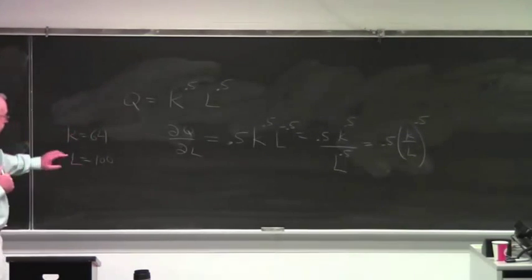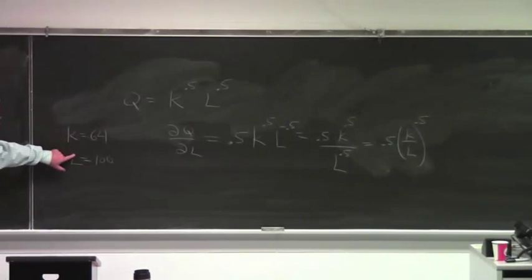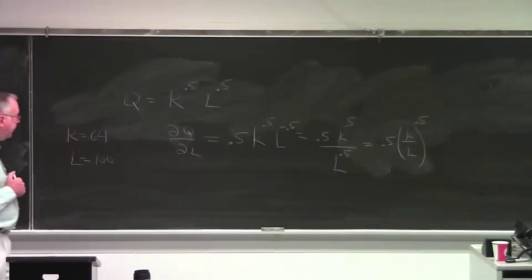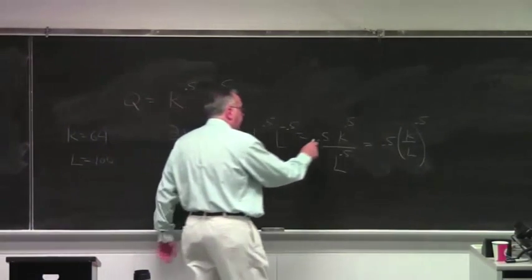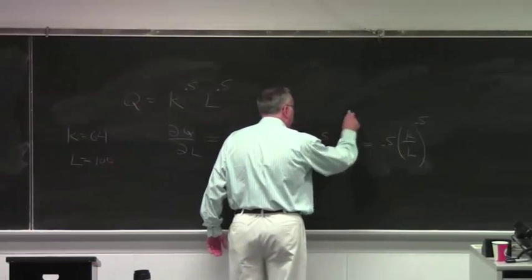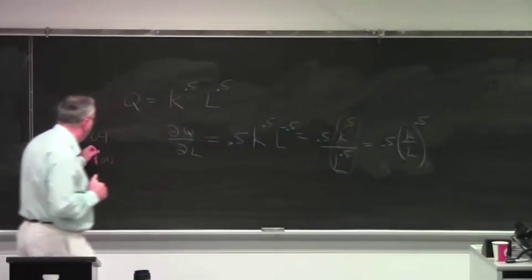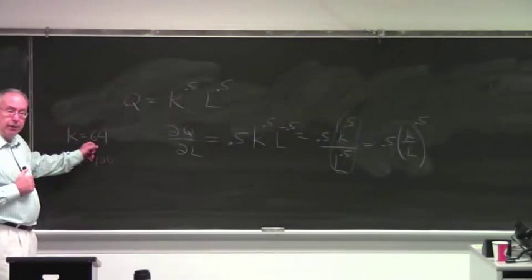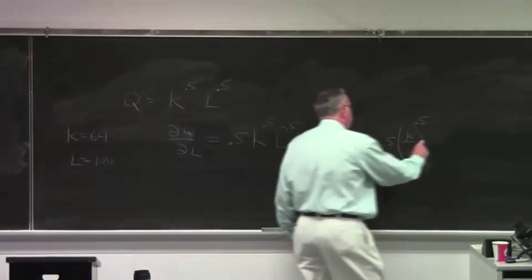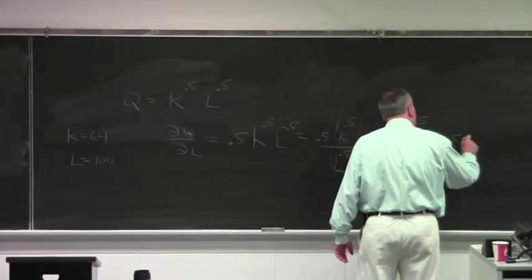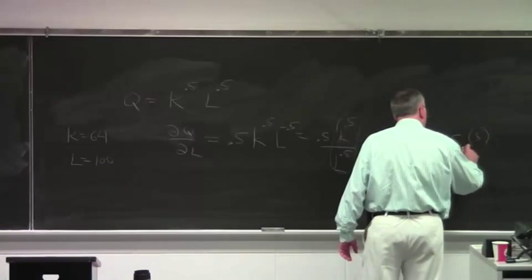Now, if you want to evaluate the marginal product of labor at this value of K and L, you just plug those values in. And in this case, it might be easier to look at this formulation right here. What is the square root of 64? Eight. So, it's just 0.5 times eight. Square root of 64.